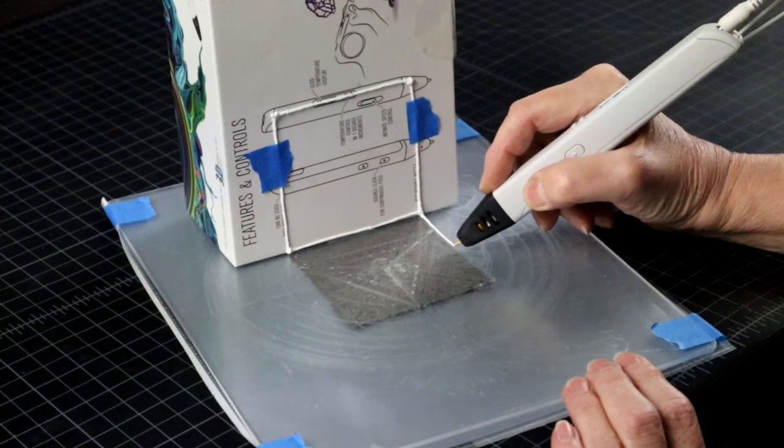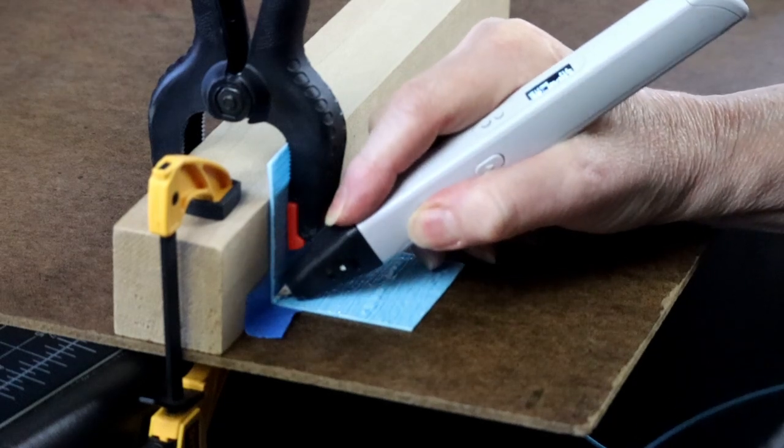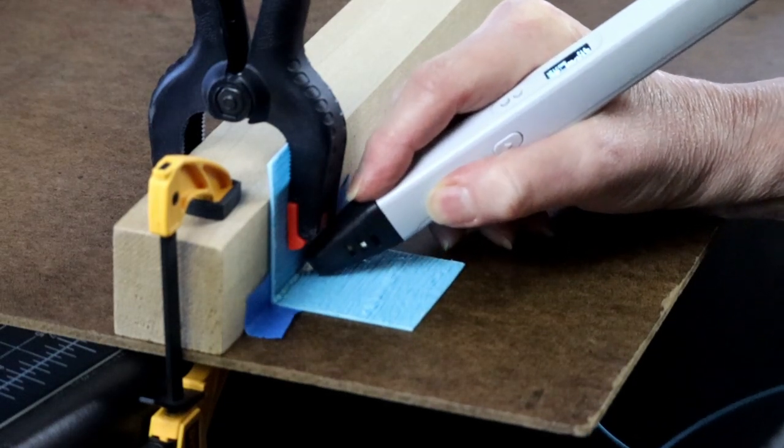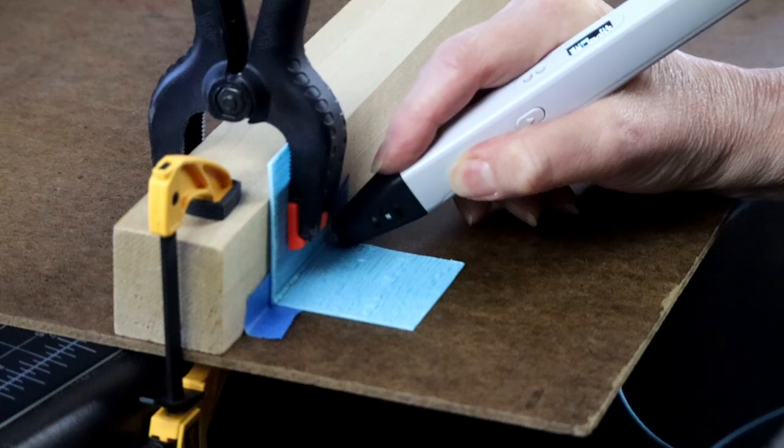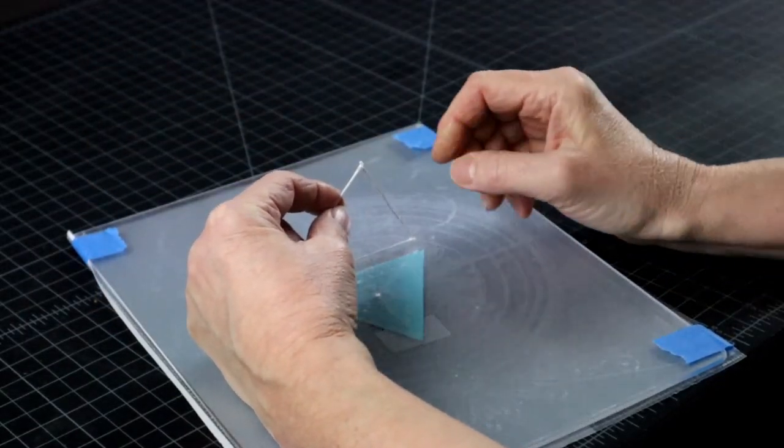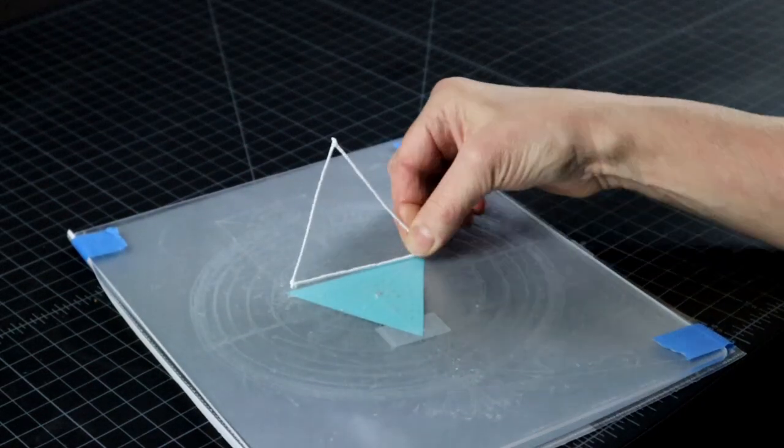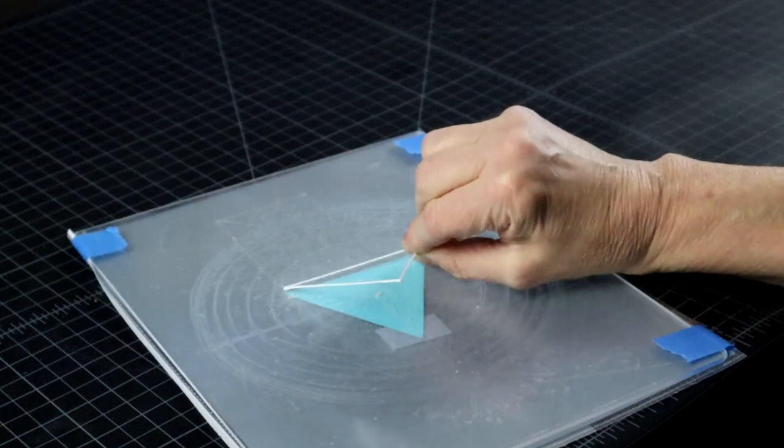Right angles are easy to make because, let's face it, life is full of square objects you can use to help you create the perfect 90 degree angles. But when we want to make an angle smaller than 90 degrees, we will need some additional help, like an angle jig.